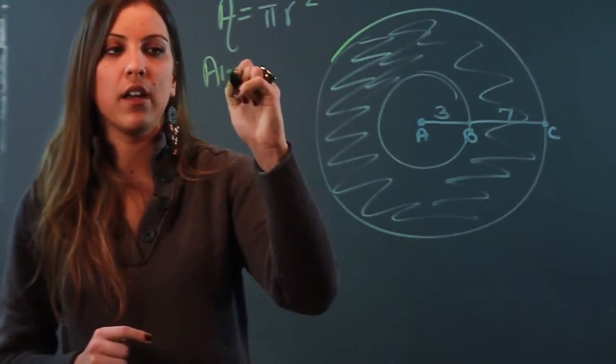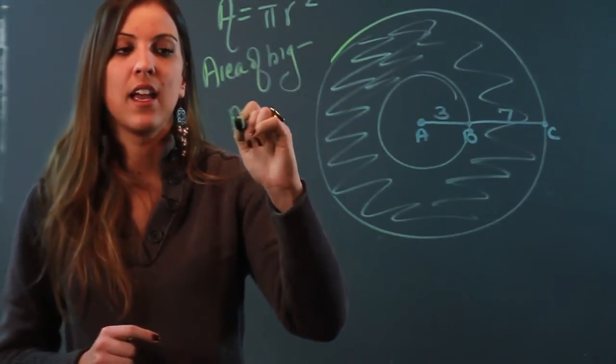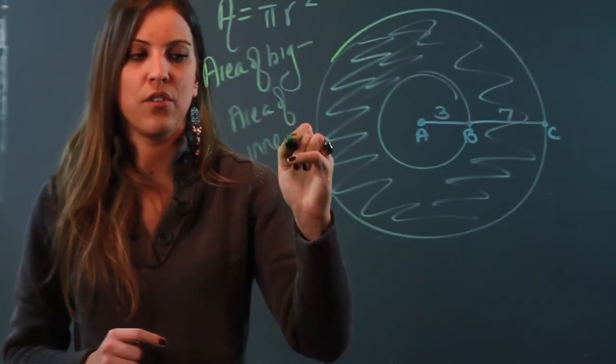So, we've got to do area of the big circle minus area of the inner circle.